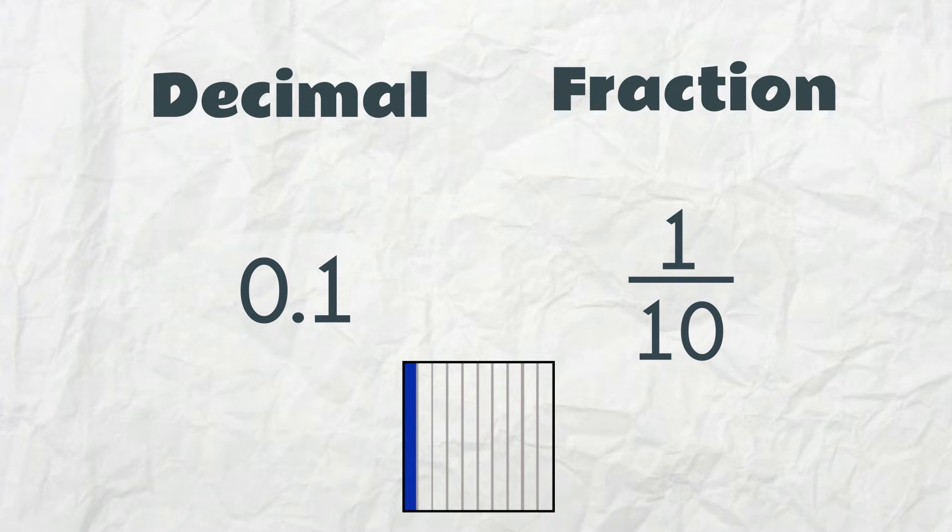The decimal 0.1, or 1 tenth, is the same as the fraction 1 tenth. They're equivalent.